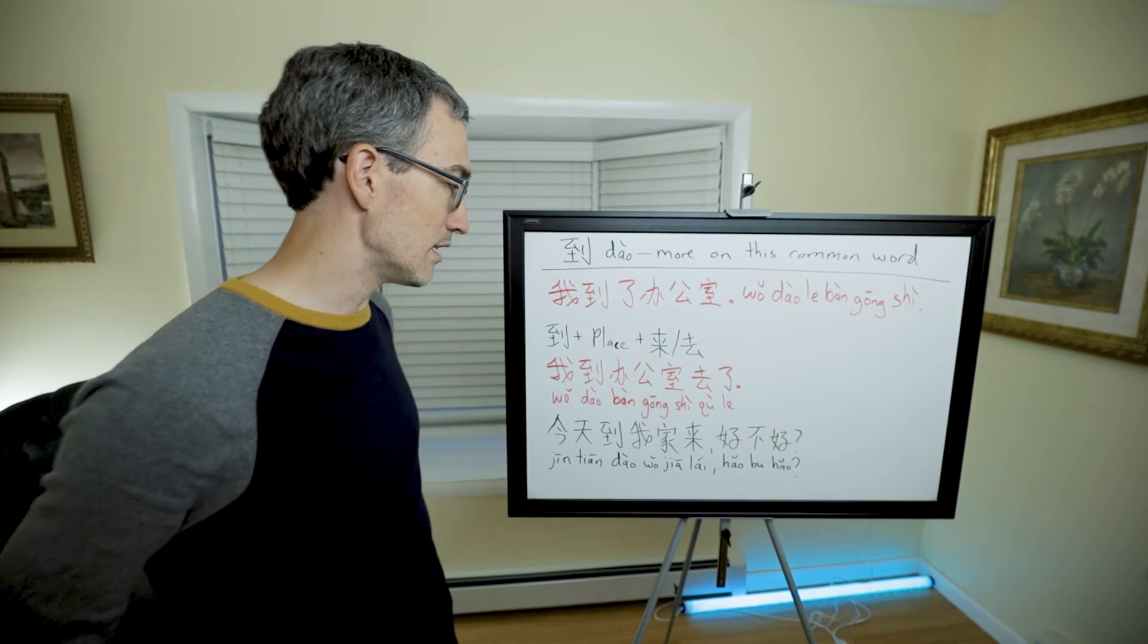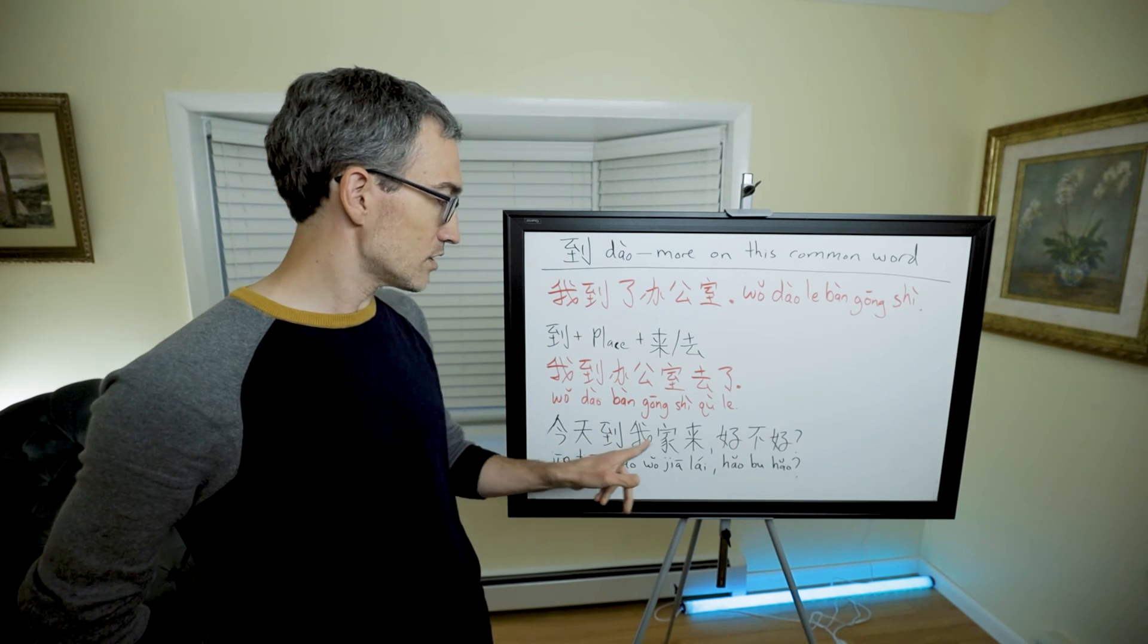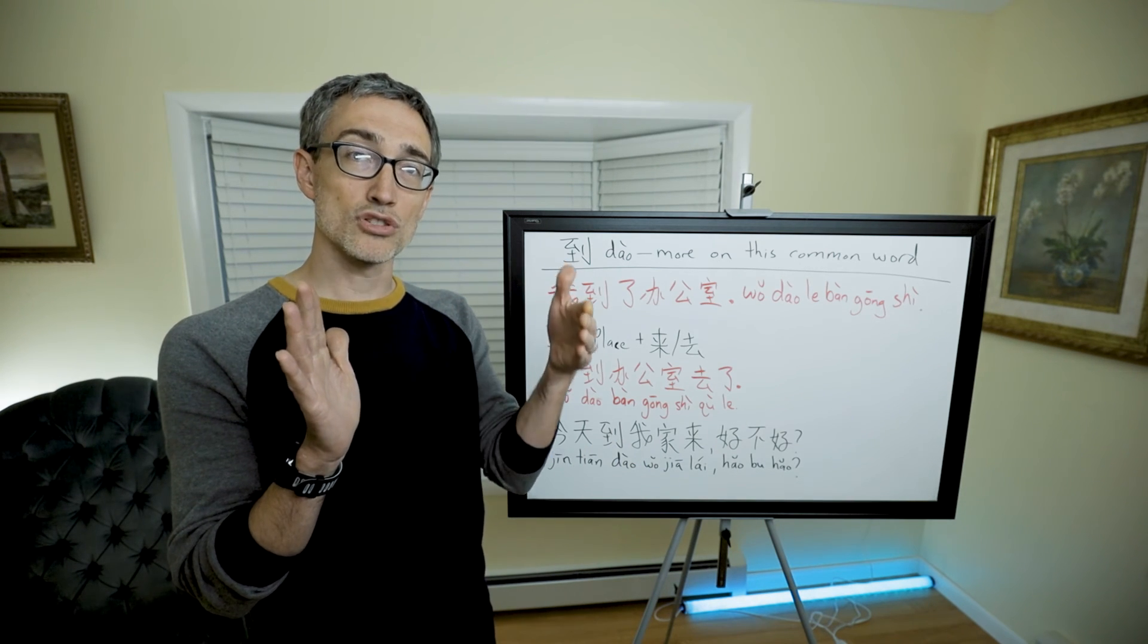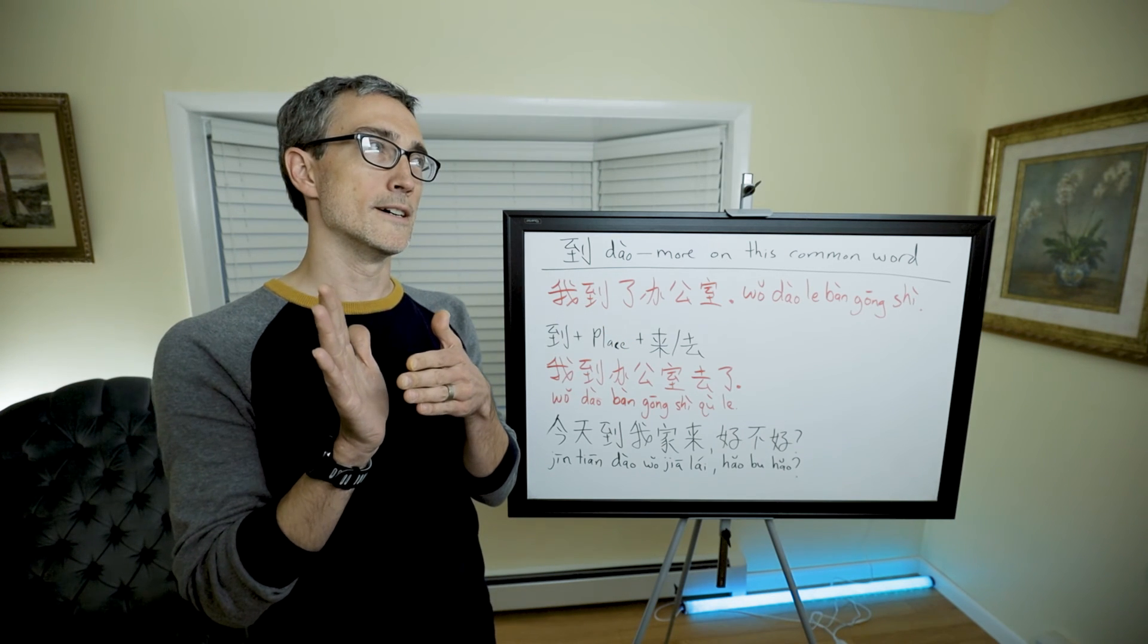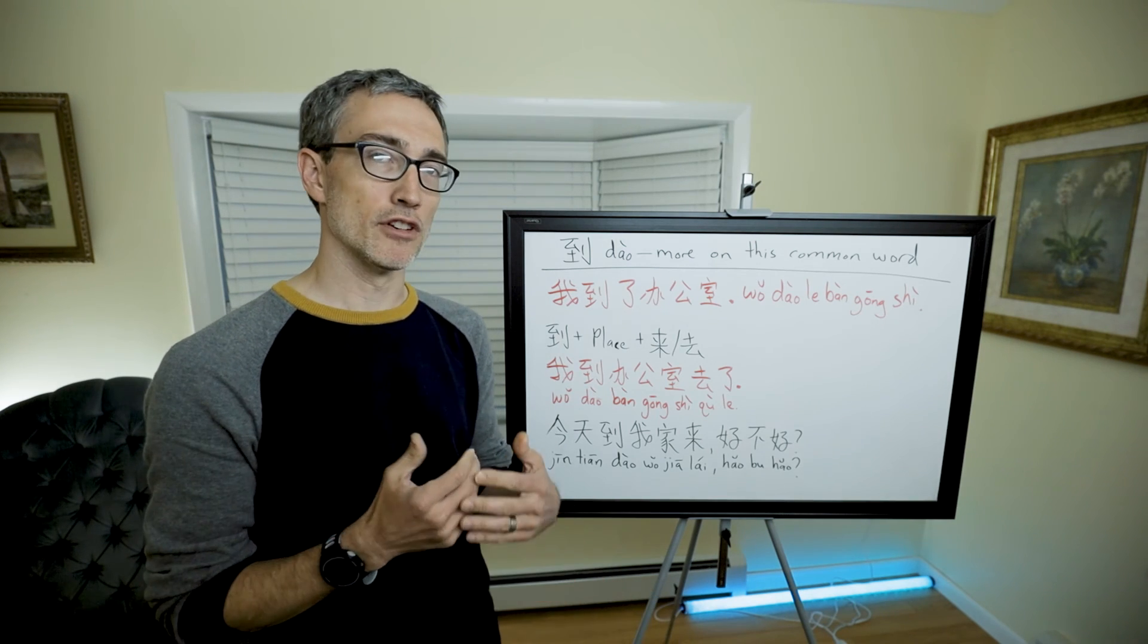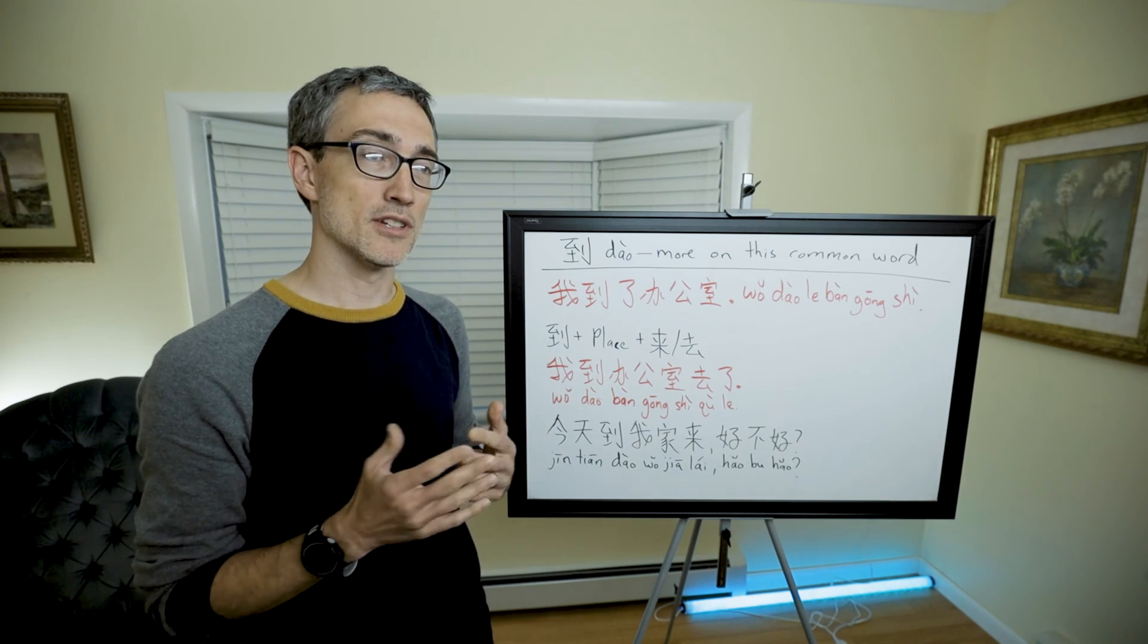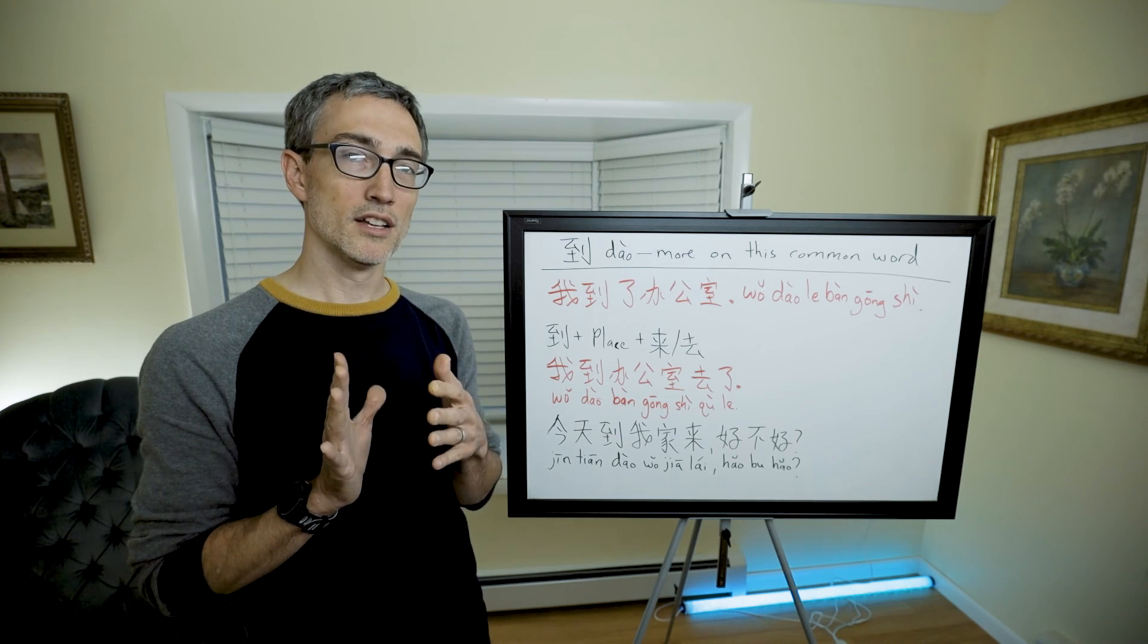今天到我家来好不好, so today come to my house, how about that. It's just 到 place 来 or 去 to mean either to go to that place or to come to that place. It doesn't mean anything different from the normal 去 place or 来 place, it's just a different option.